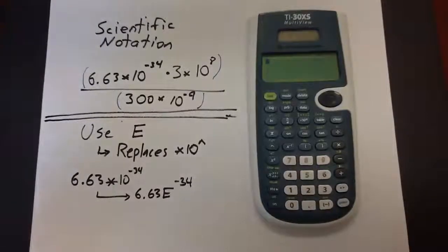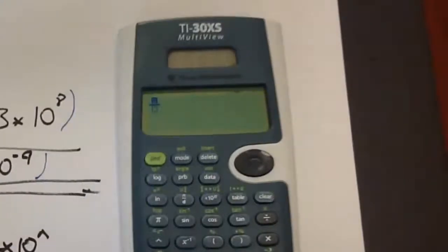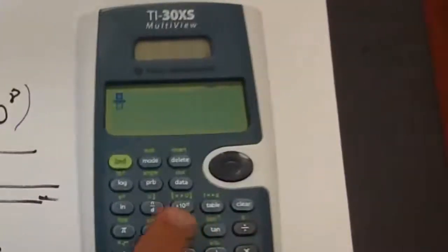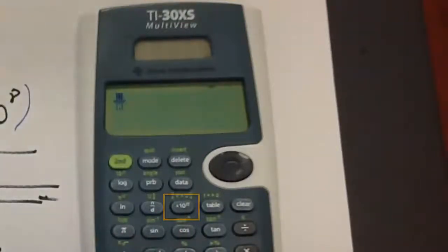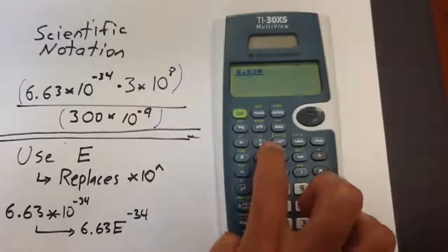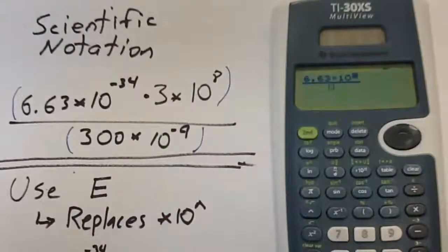Now I'll show how to solve this problem using the TI-30XS. When handling complicated fractions, begin by pressing the n-over-d button to place the division bar. When entering scientific notation, this calculator does not have an uppercase E. However, it has a button saying 'times 10 raised to the n,' which automatically places the times sign, the 10, and the exponent marker. Starting with the numerator, enter 6.63, then press the 'times 10 raised to n' button, which inserts the times, the 10, and a dotted box above the 10 for the exponent.